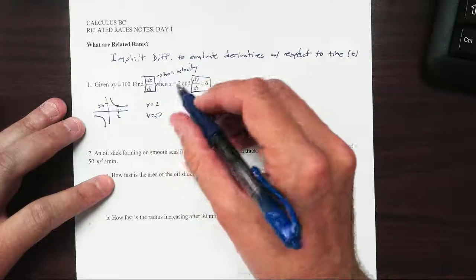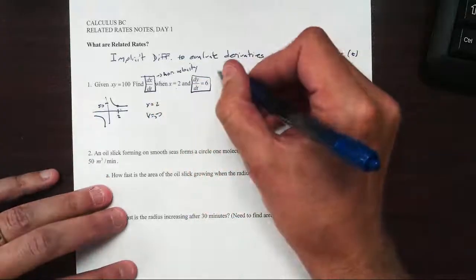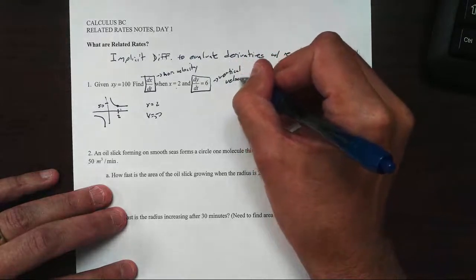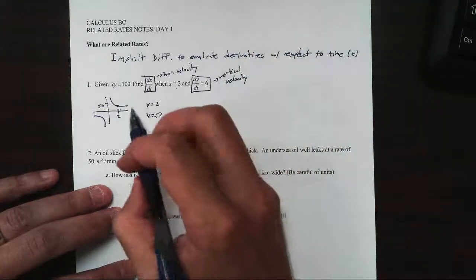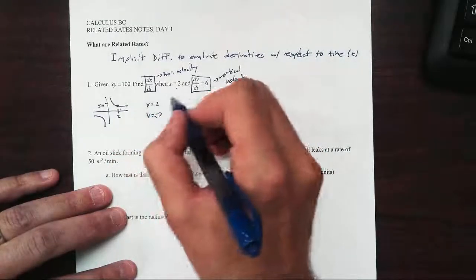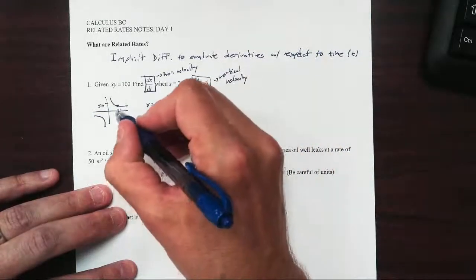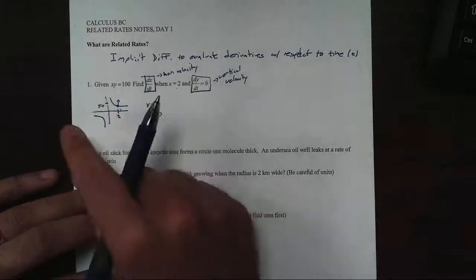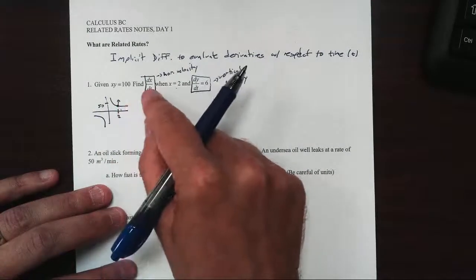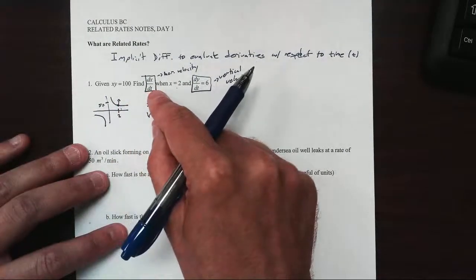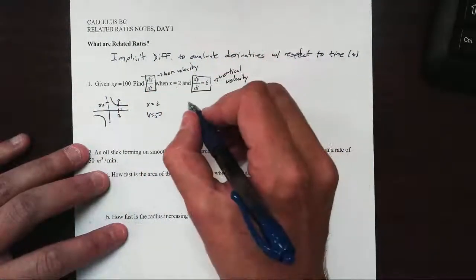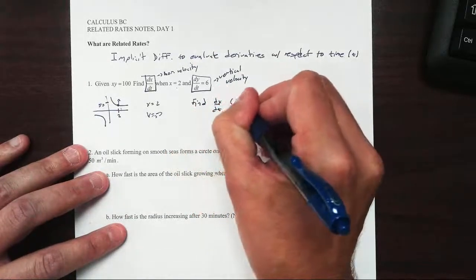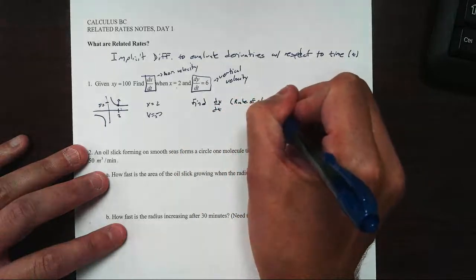And dy/dt is 6. This is our change in y over change in time - our vertical velocity. In other words, it's how fast we are going in the vertical direction. From the vertical velocity, we know it's moving up. But the question is, is it moving to the right or to the left? That's what we're going to answer with the derivative. We want to find dx/dt, which is a rate of change.